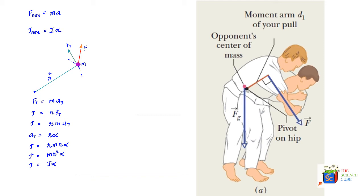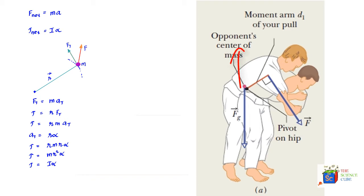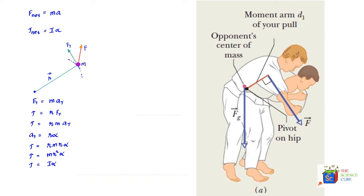From the physics we've understood so far, the force f induces angular acceleration using Newton's second law for rotations: torque_net = I α. When the opponent's feet are off the floor, there are three forces acting on him: one is force f by you tugging at his sleeve, two is the normal force from you on him at the pivot point, and three is the force of gravity, his mg.